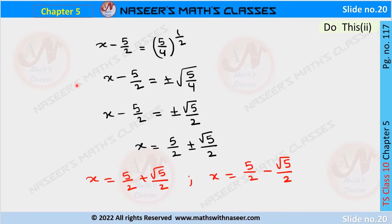To further simplify, we write x - 5/2 = (5/4)^(1/2), which is the square root. This gives x - 5/2 = ±√5/2, because √4 = 2 in the denominator.